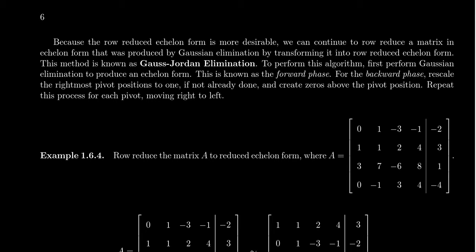A variant of Gaussian elimination is what's known as Gauss-Jordan elimination. The idea behind Gauss-Jordan elimination is that row reducing is an effective tool to form an echelon form. But if we want an echelon form, the row reduced echelon form is the most desirable — it'll be unique, and once you have it, the problem is basically over. So how do we get the row reduced echelon form specifically?